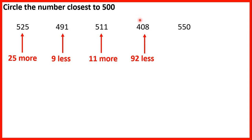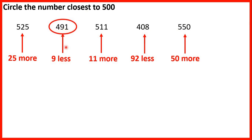Or we could work out that 500 minus 408 is 92. And finally 550 is 50 more than 500. So we need to circle the number closest, and that will be 491 because that's only 9 less than 500, and all our other numbers are more than 9 away. Remember the closest number could be smaller or larger, but 491 is the number with the smallest difference, so that's why it's the closest number to 500.